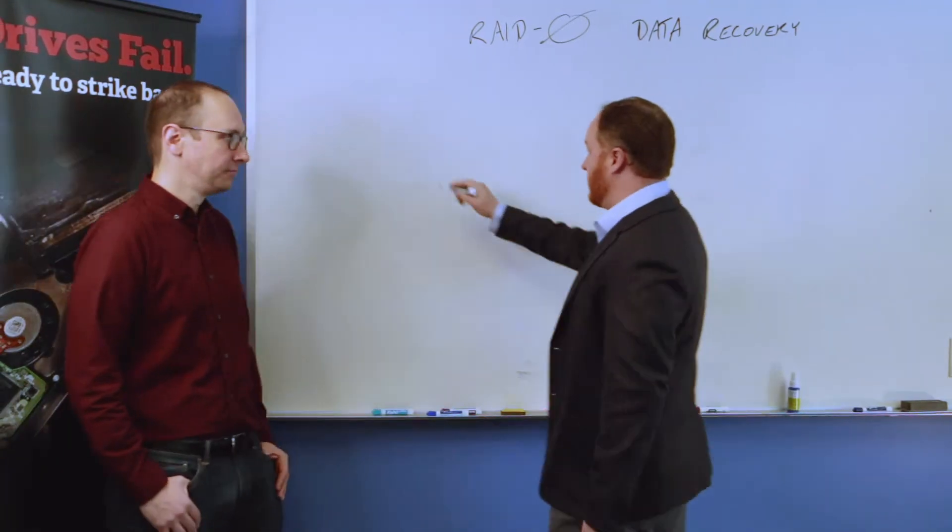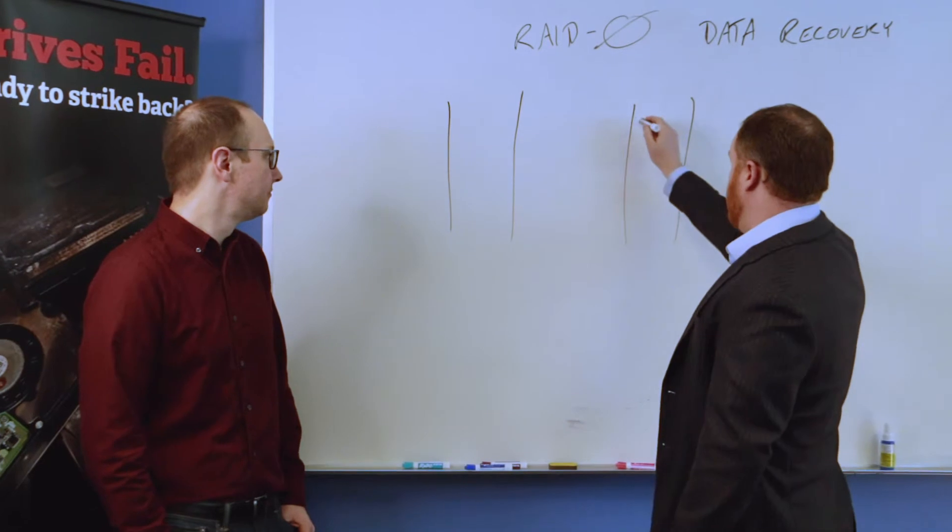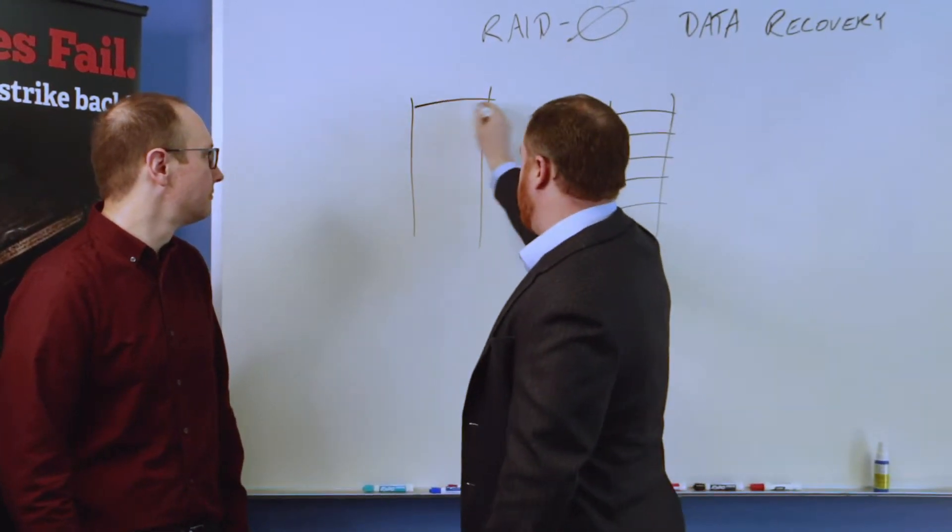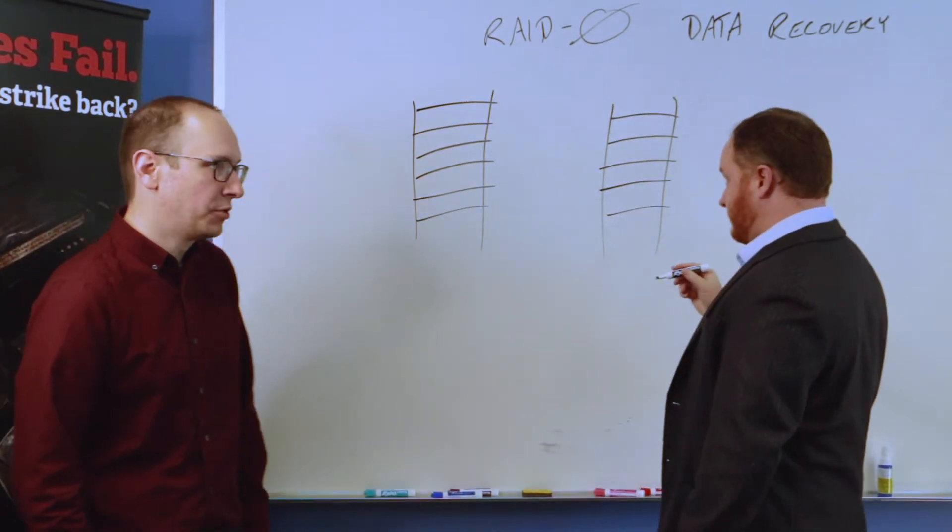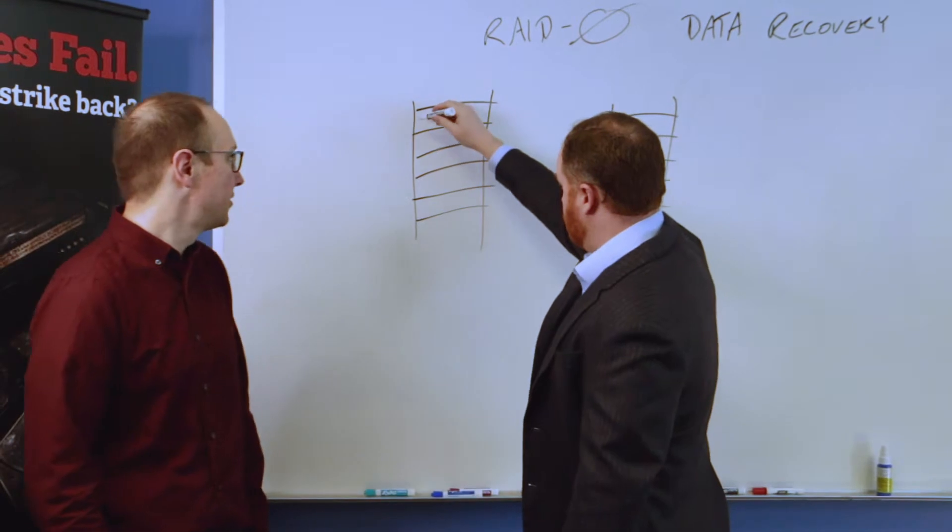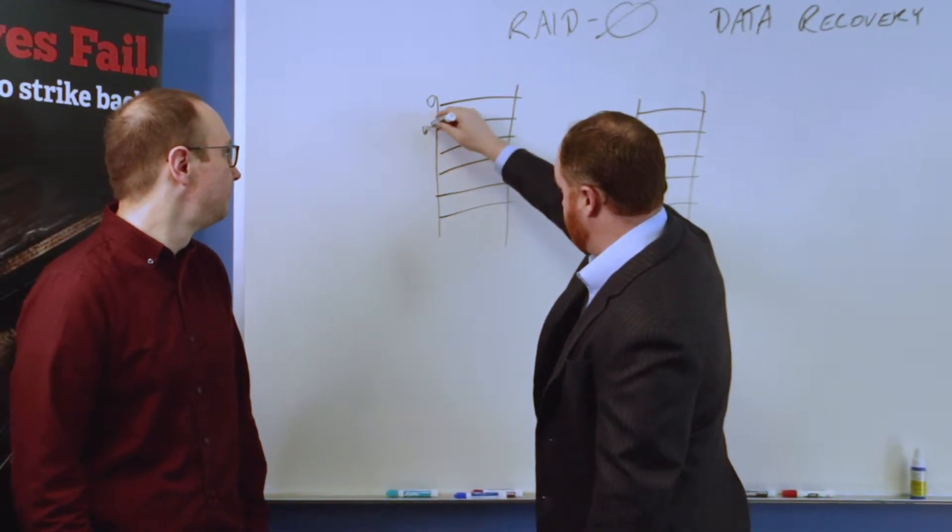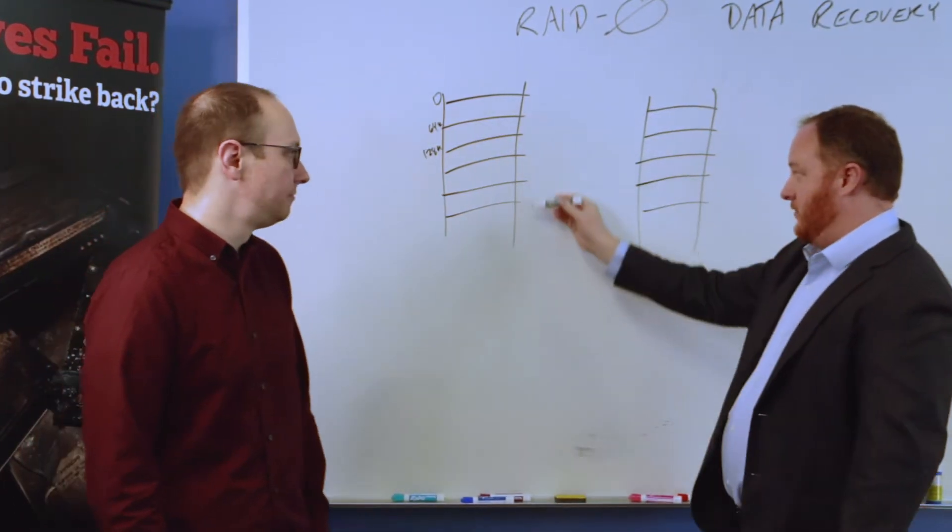So anyways, the way it works real briefly is we have two disks here. And these are the positions on the disks, and these positions are what we call stripes. What's a common stripe size, Greg? Anywhere between 64 kilobytes to 512 kilobytes. So each one of these is position zero, position 64k and 128k on individual disks.